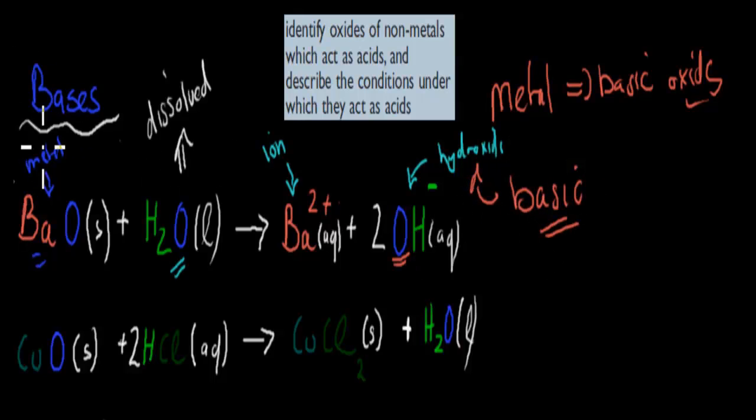We've got 2+, which means this barium has lost electrons. It's given these electrons to the water molecule to produce, one molecule produced 2 OH-.